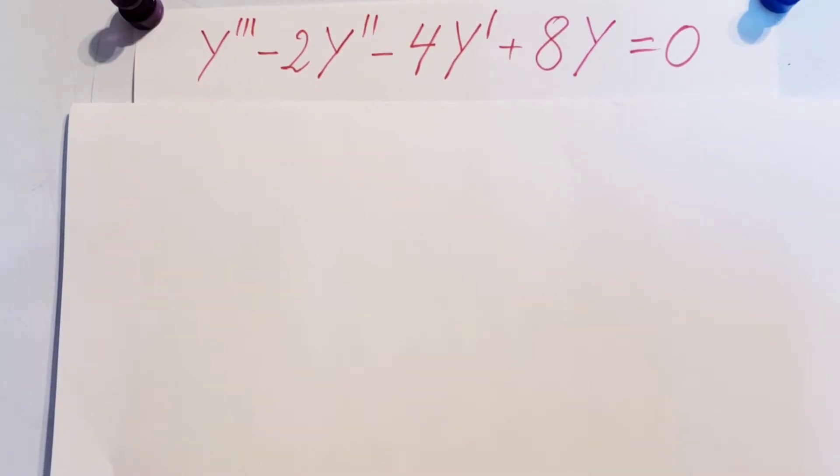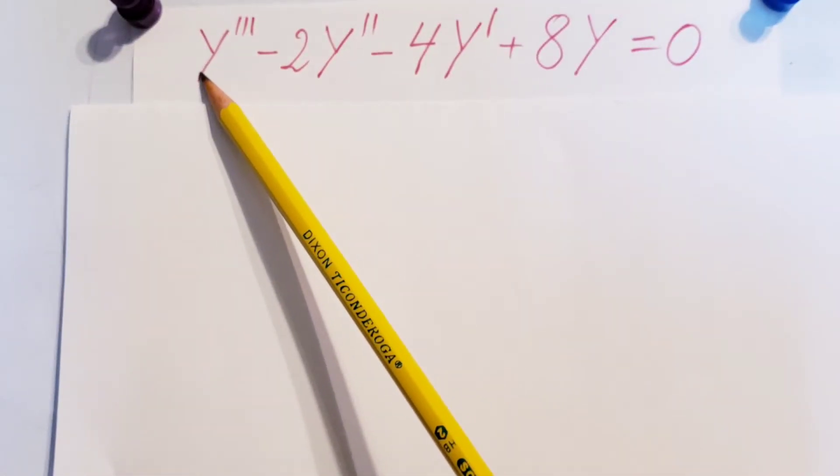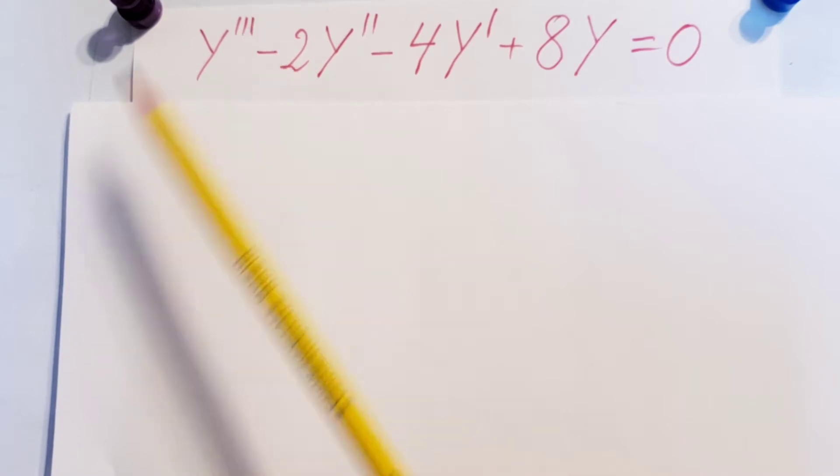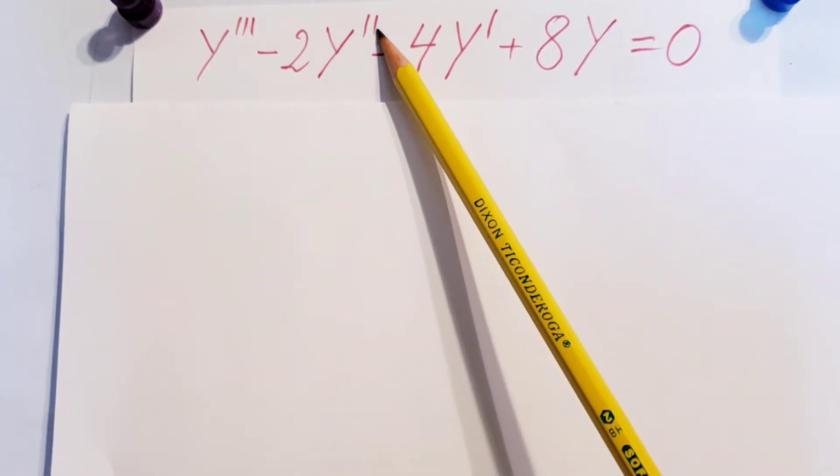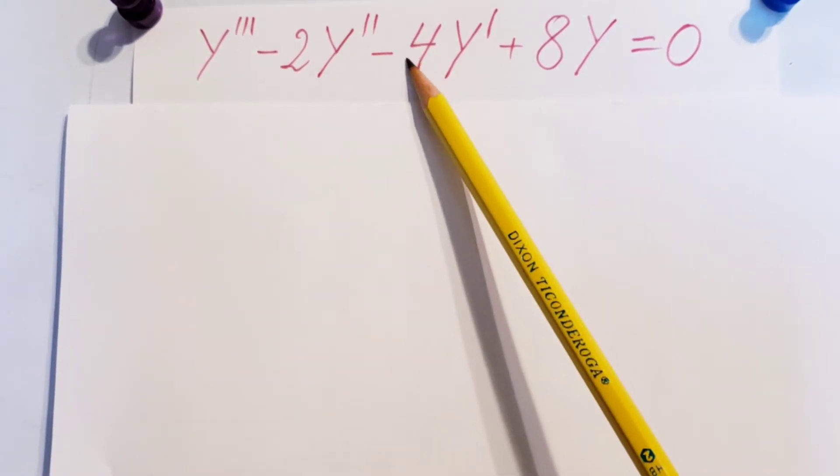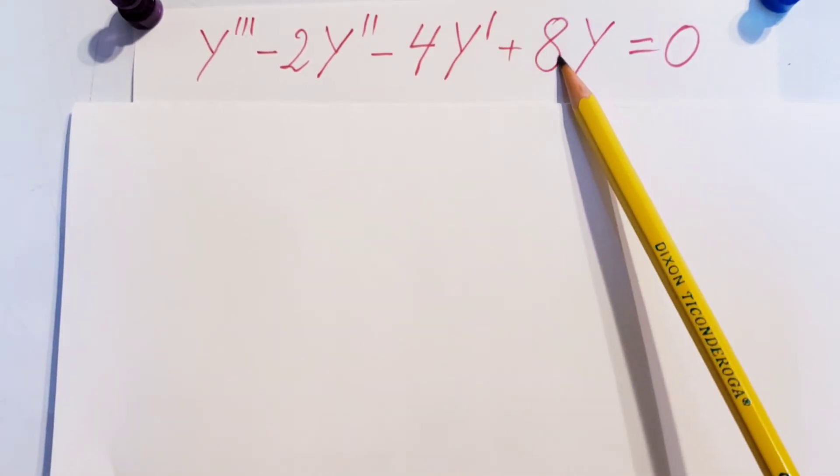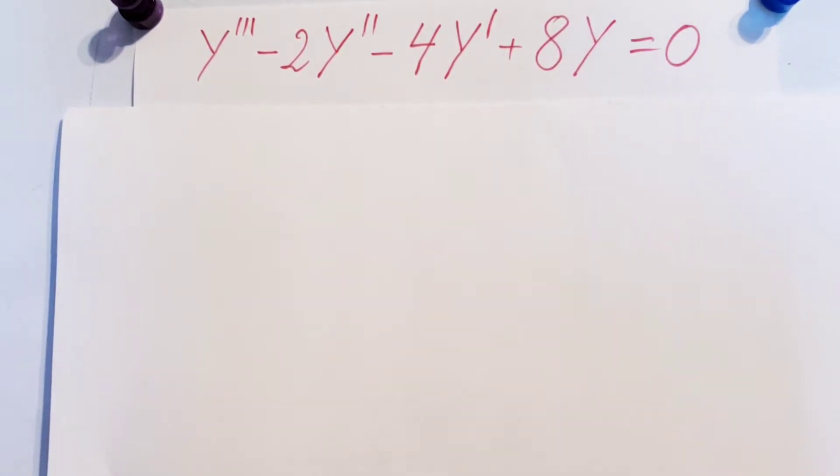All right, let's solve this ODE. We have y triple prime minus 2y double prime minus 4y prime plus 8y equals 0. Now we don't have anything here, so this is a nice homogeneous ODE.